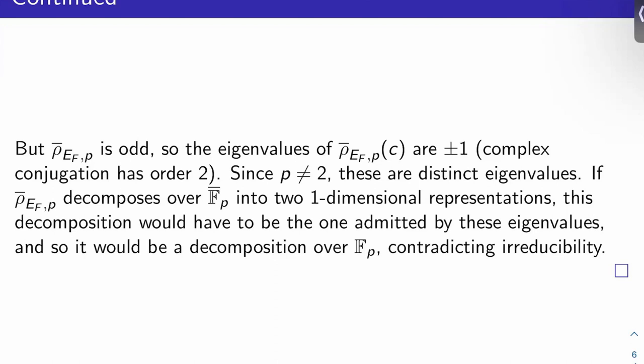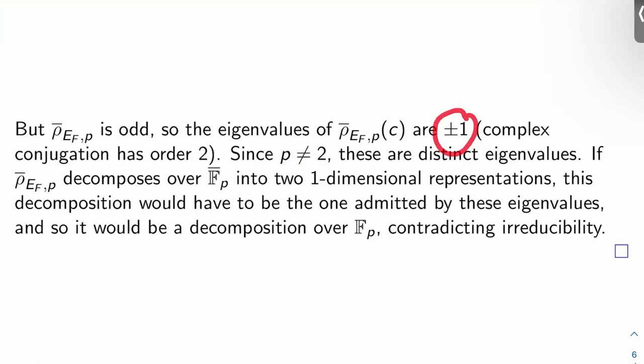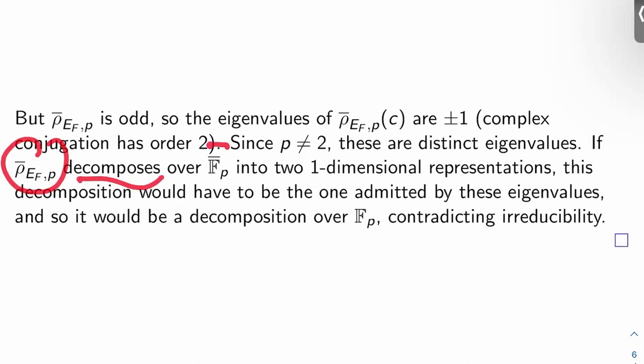Now, P isn't 2. It's at least 5. So these are distinct eigenvalues. That's the point. If ρ̄_E_F,P decomposes over the algebraic closure of F_P into two one-dimensional subrepresentations, the point is this decomposition would have to be the one admitted by these two eigenvalues. It would have to break down into the decomposition given by these two lines. But that would be a decomposition over F_P, because these eigenvalues are defined over F_P. So that contradicts irreducibility.